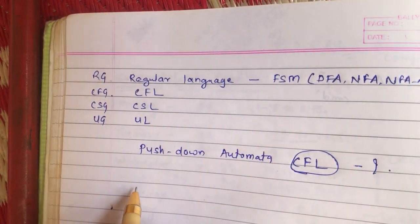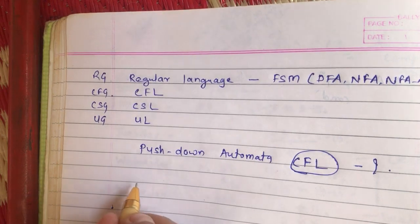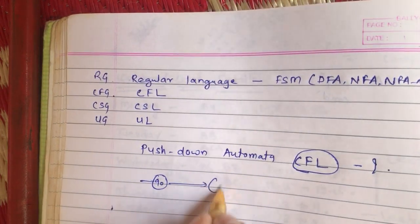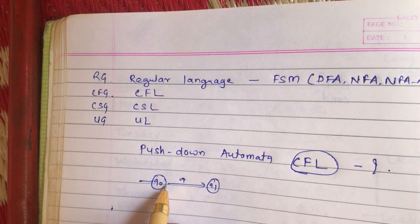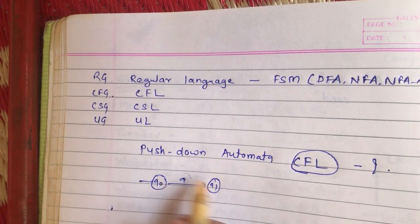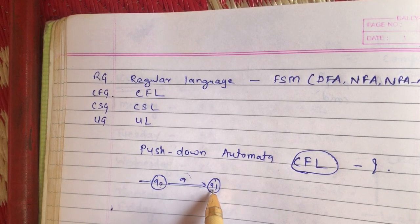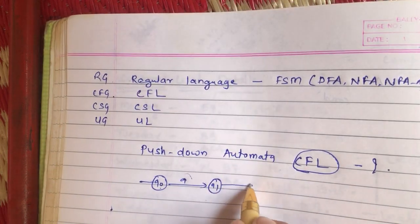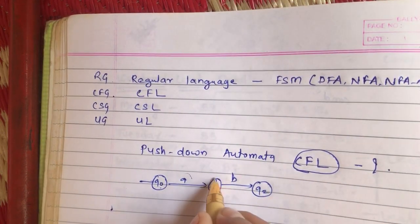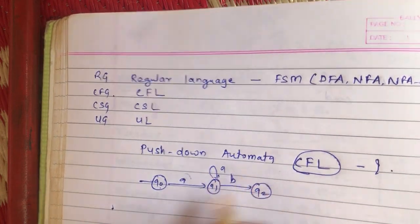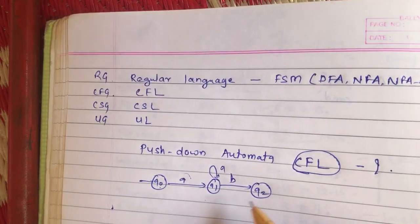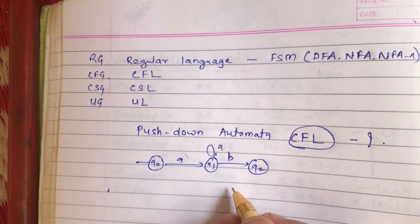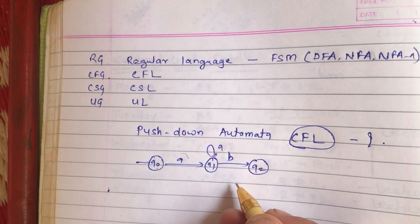Finite state machines comprise states and transitions. At any point in time when we process one particular transition we process one symbol, make a decision, and move from one state to another. As the string gets processed, the states keep changing depending on the transitions in our diagram, and finally we can determine whether a particular string is accepted or rejected by that finite state machine.